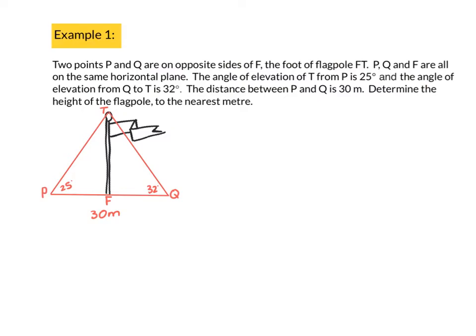These sort of questions normally have quite a long explanation and a picture accompanying the explanation. So let's look at it. It says two points, P and Q, on opposite sides of F, the foot of the flagpole FT. So P and Q are opposite sides of F. Then it says P, Q, and F are all on the same horizontal plane, meaning they all line up on the same line.